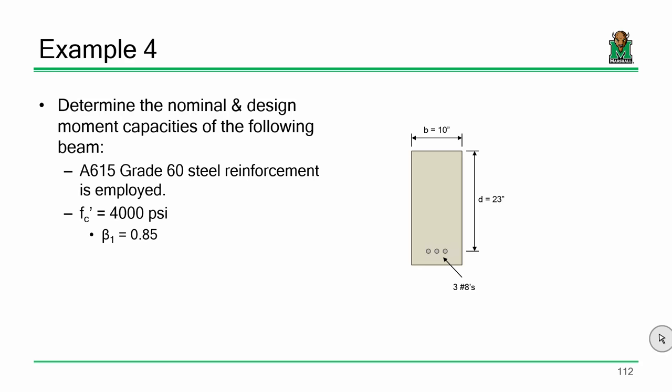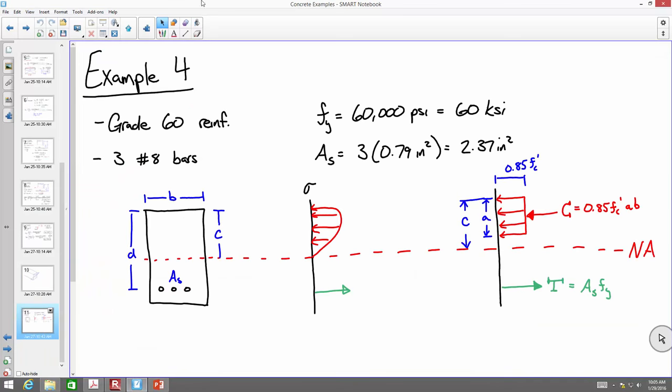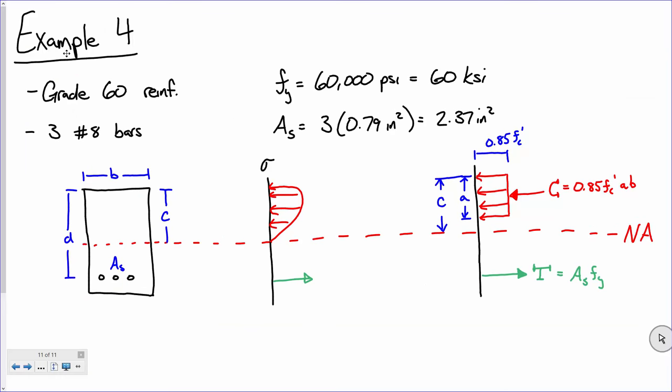We started to explore that concept with this particular example: a beam 10 inches wide with an effective depth of 23 inches and an area of steel of about 2.37 inches squared for three number eight bars. I want to point out some notation. This distance from the top of the beam to the tensile steel, I'm calling D — we will always call it D. When we put compression steel up top, the distance from the top to that steel is D prime.